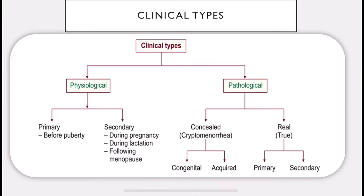Now we come to the pathological types. They are further classified into concealed and true or real. Concealed is also known as cryptomenorrhea, which is divided into congenital and acquired cryptomenorrhea. The real or true type is further classified into primary and secondary amenorrhea.